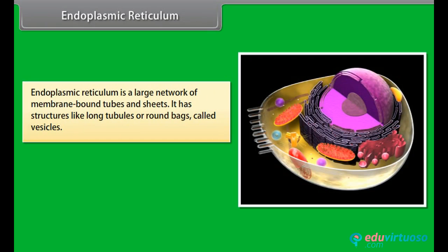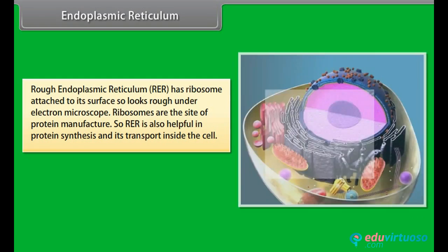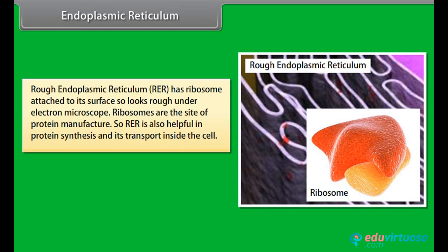Endoplasmic reticulum is a large network of membrane-bound tubes and sheets. It has structures like long tubules or round sacs called vesicles. On the basis of presence of ribosomes, they are of two types: rough endoplasmic reticulum (RER) and smooth endoplasmic reticulum (SER). RER has ribosomes attached to its surface, so it looks rough under the electron microscope.